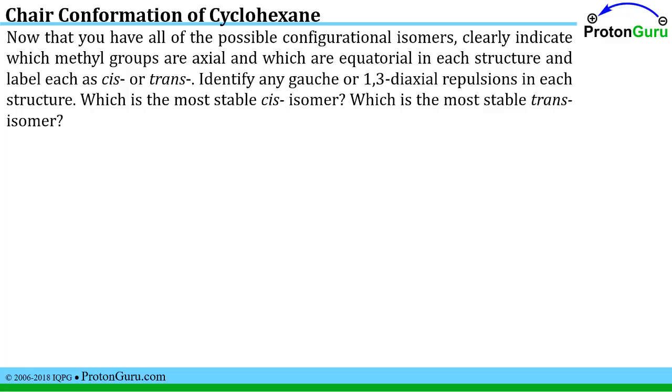which is the most stable cis isomer, which is the most stable trans isomer. This is really a laundry list of all the different types of questions you might be asked for analyzing structures of chair cyclohexanes with substituents. So let's take a look at these one question at a time.